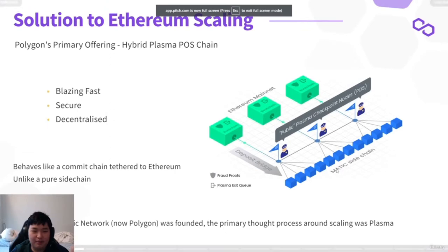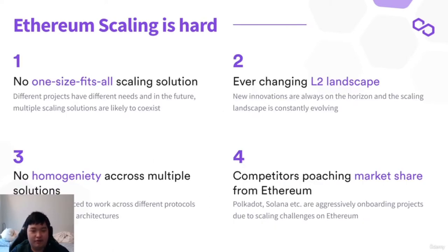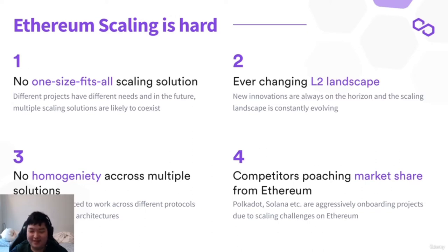Now we're going to talk about why you need Polygon. Ethereum scaling is pretty hard, because a lot of different projects require different scaling needs. If you want to mint 10,000 NFTs, that's probably slightly different than if millions of traders are constantly arbitraging on your platform — like Uniswap or SushiSwap. You just need to know that Ethereum scaling is diverse, and it's a hard problem to solve.